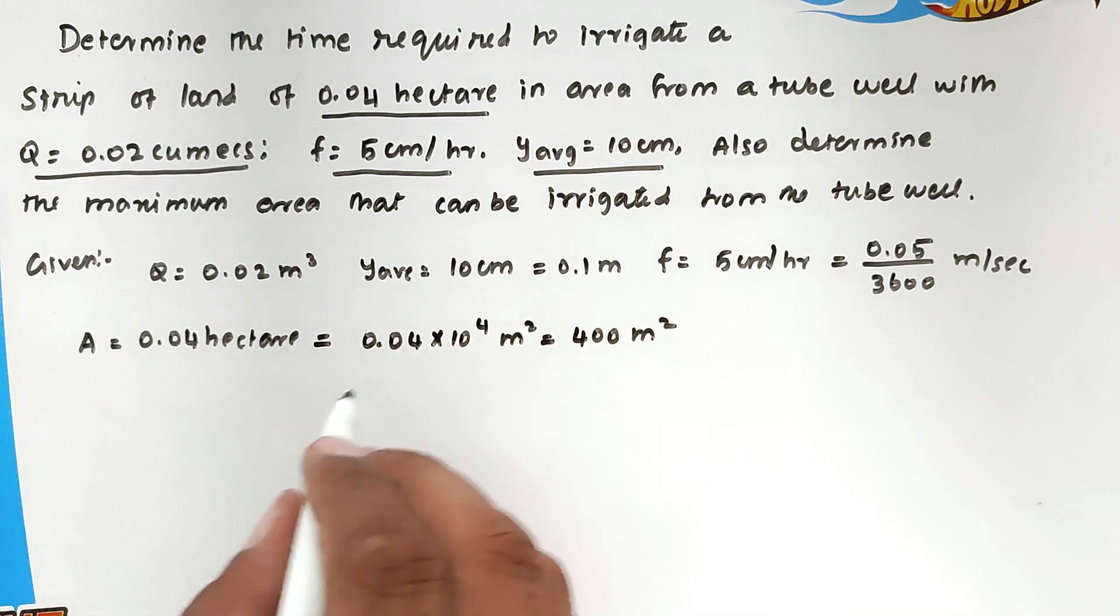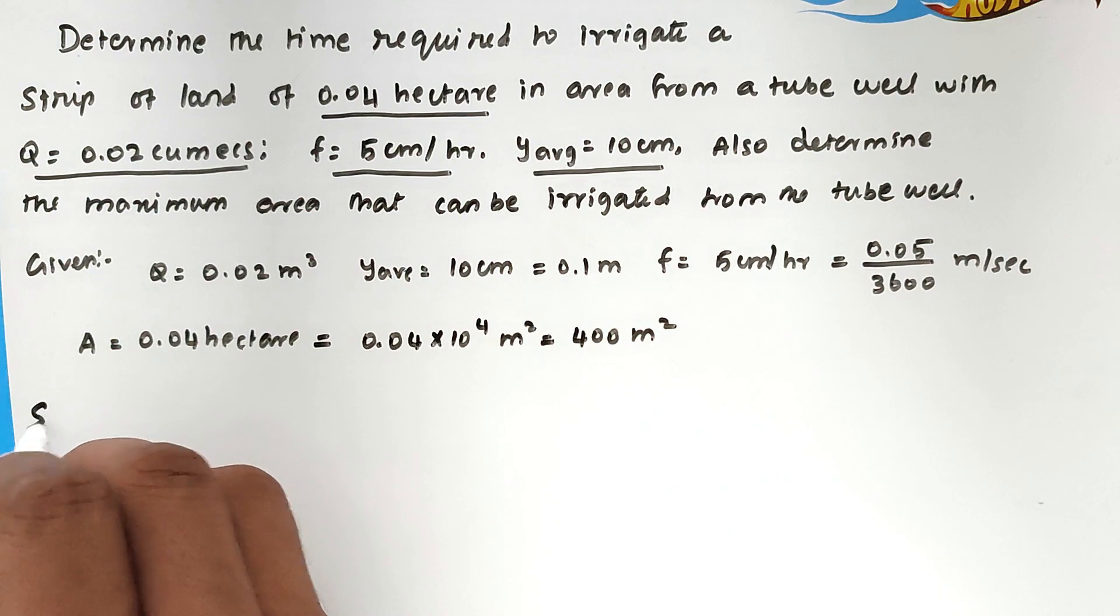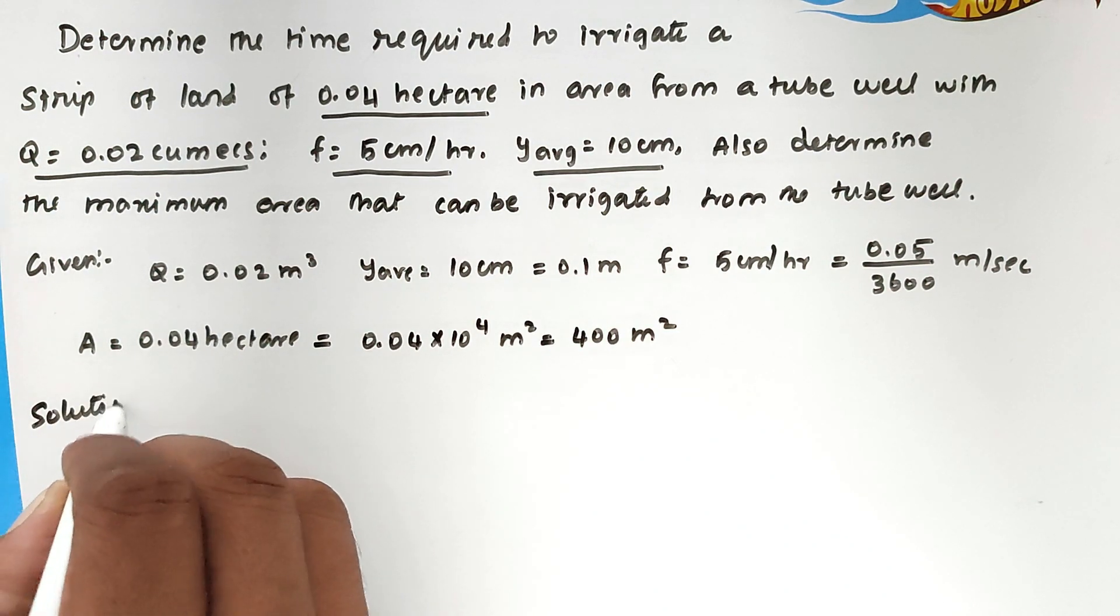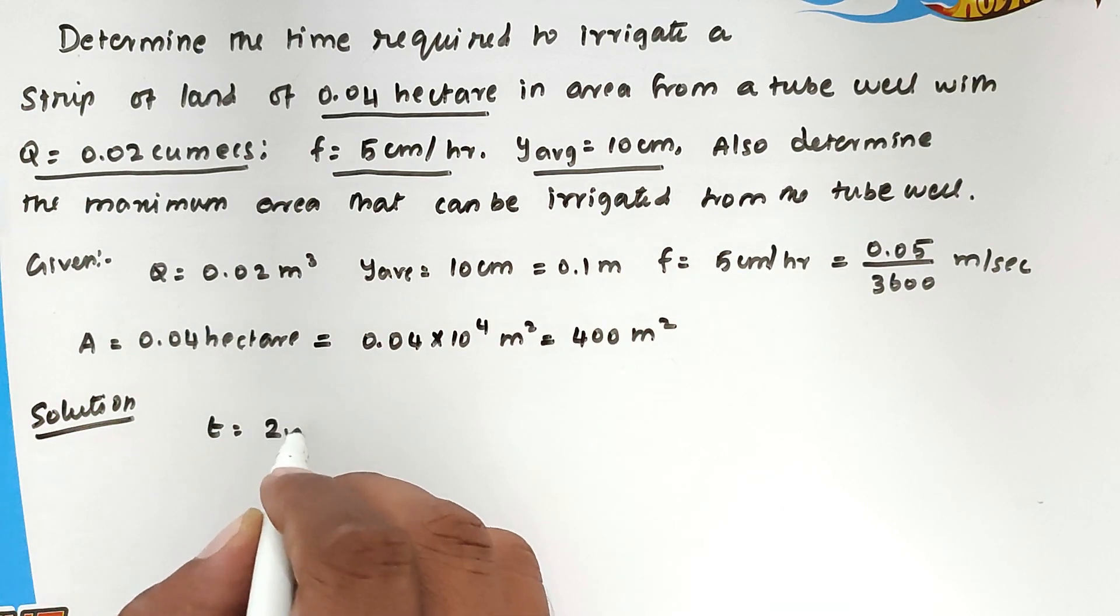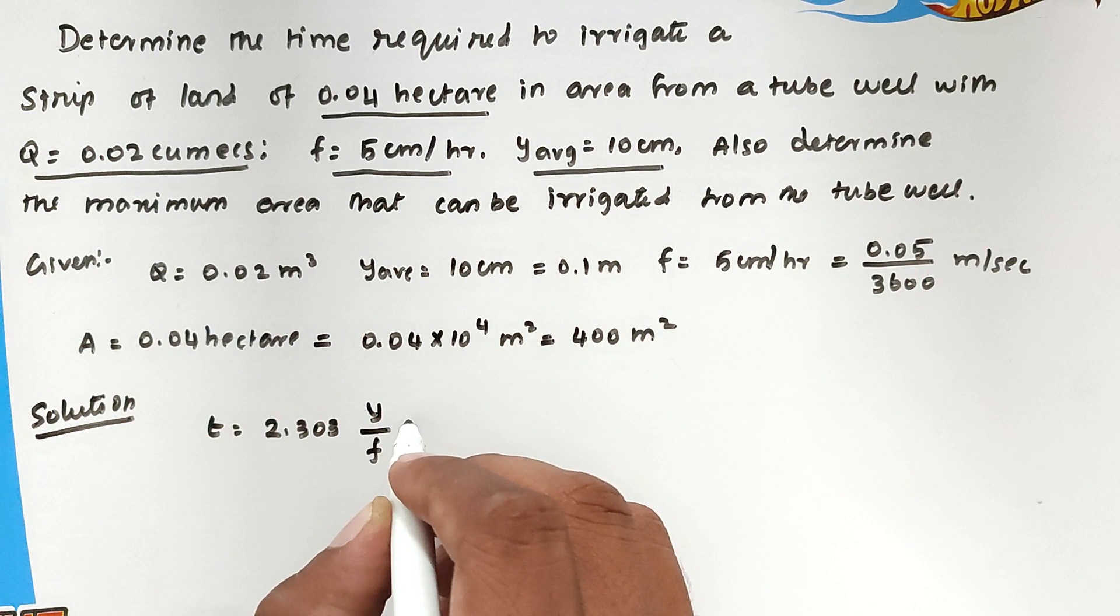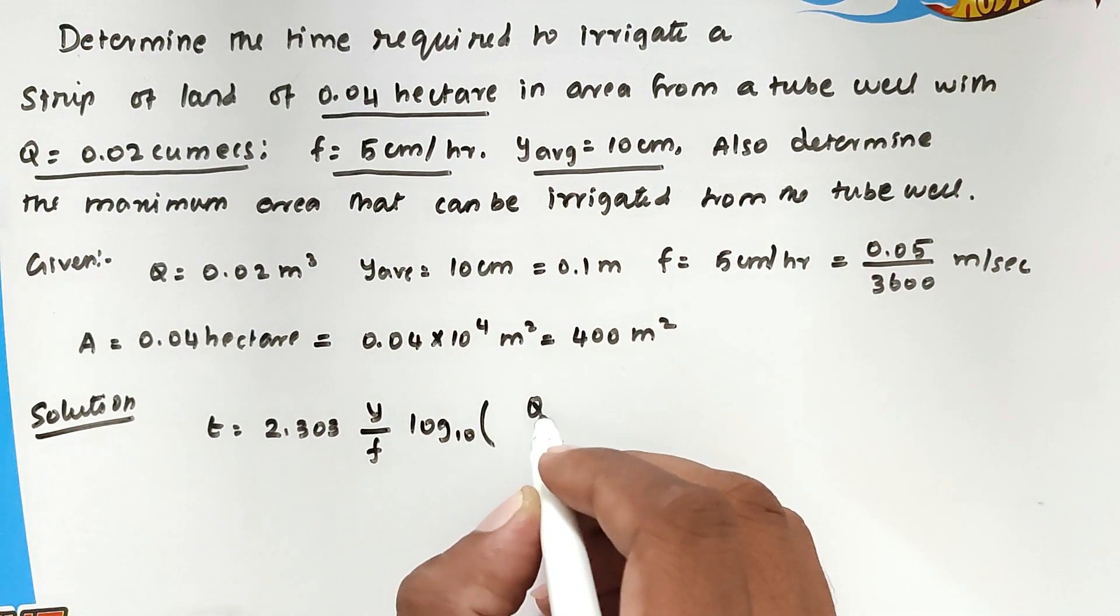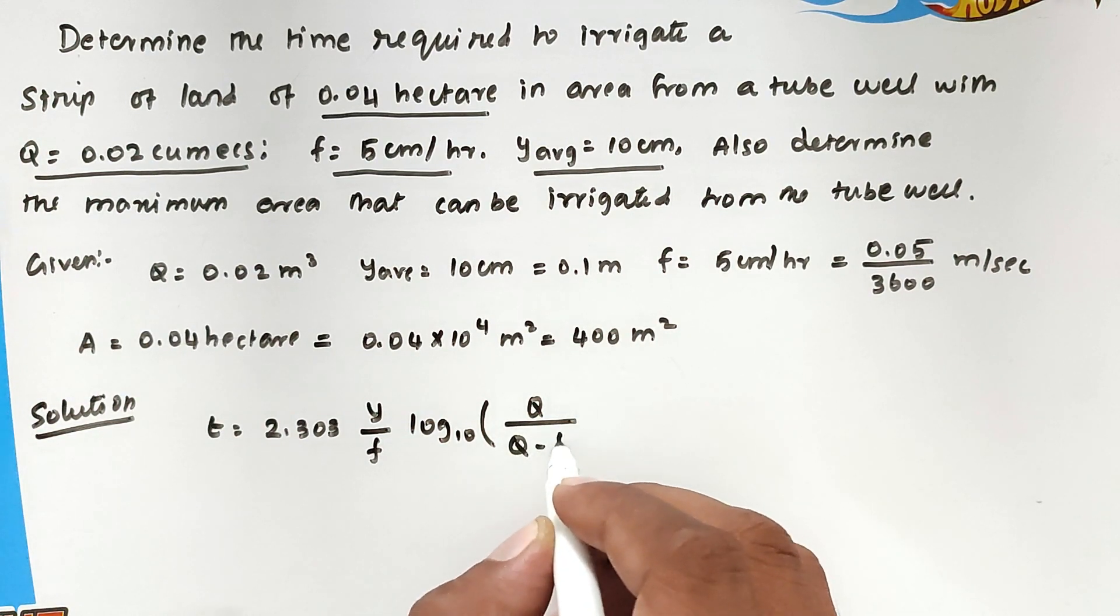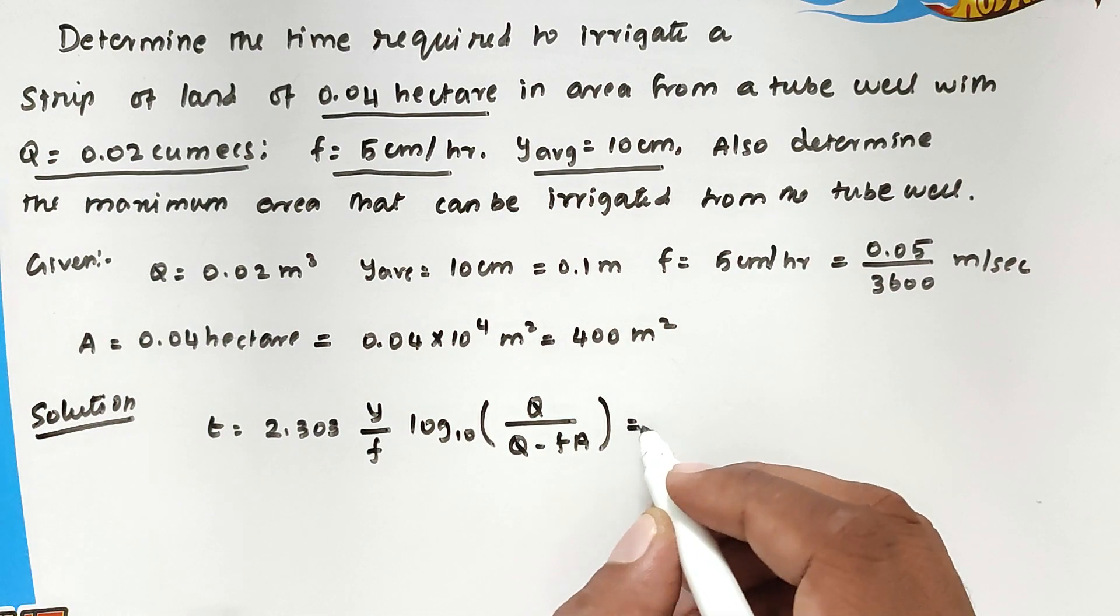So now we can find the time required to irrigate the strip. Solution: the formula is t = 2.303 Y divided by F into log base 10 of Q divided by (Q minus F into A).